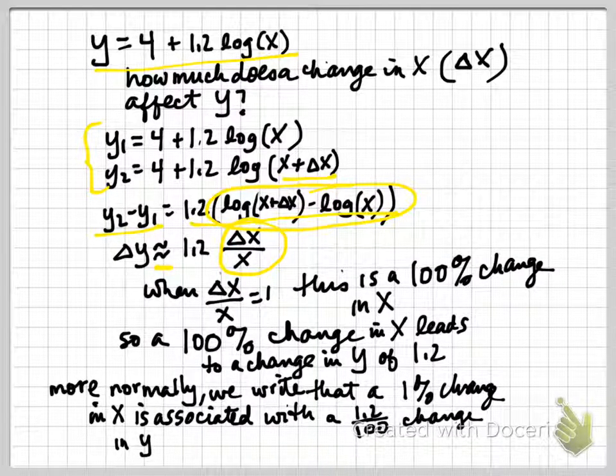So with that interpretation in mind, we can see that our regression tells us that a 100% change in x, that is a change in the log of x of 1, leads to a change in y of 1.2. So more normally, we write that a 1% change in x is associated with a 1.2 divided by 100 change in y. So it would be associated with a 0.012 change in y.